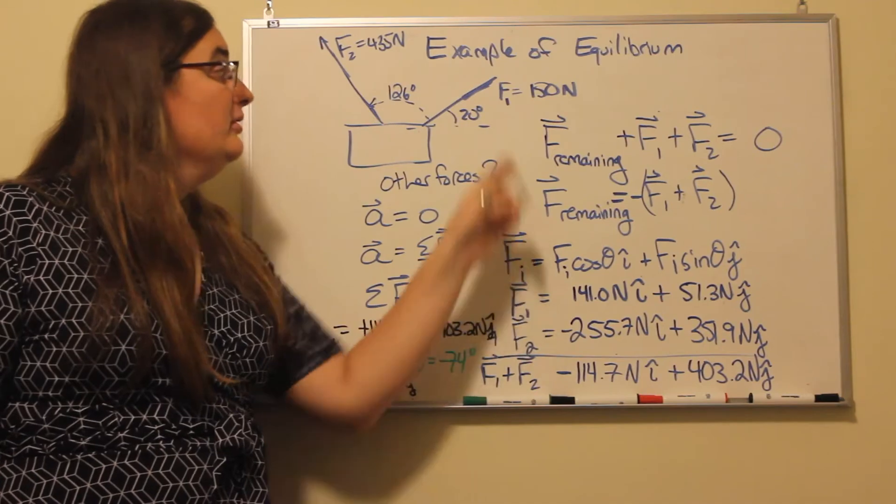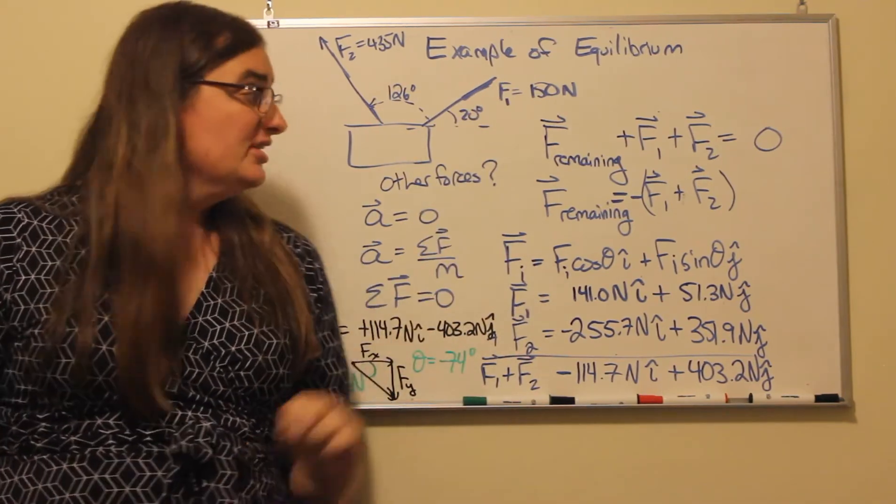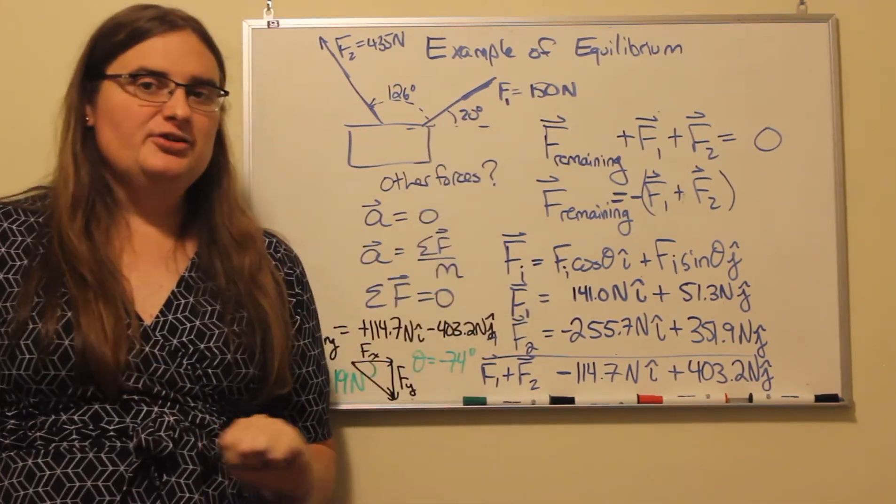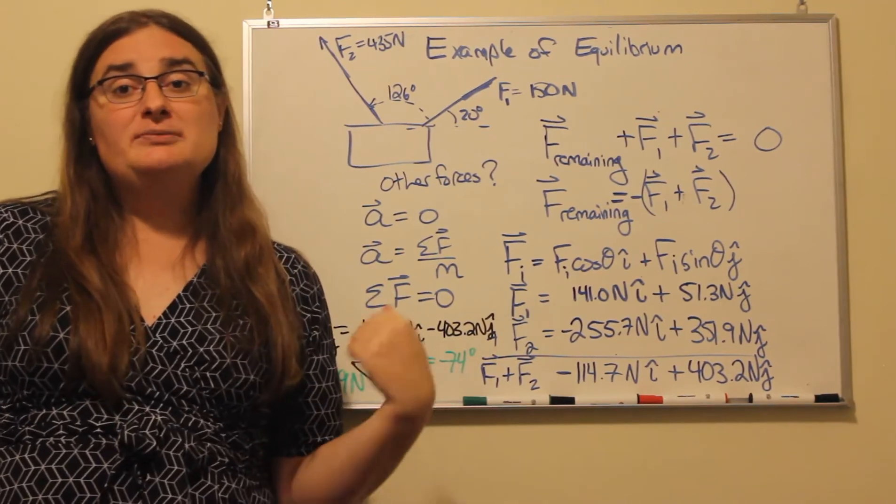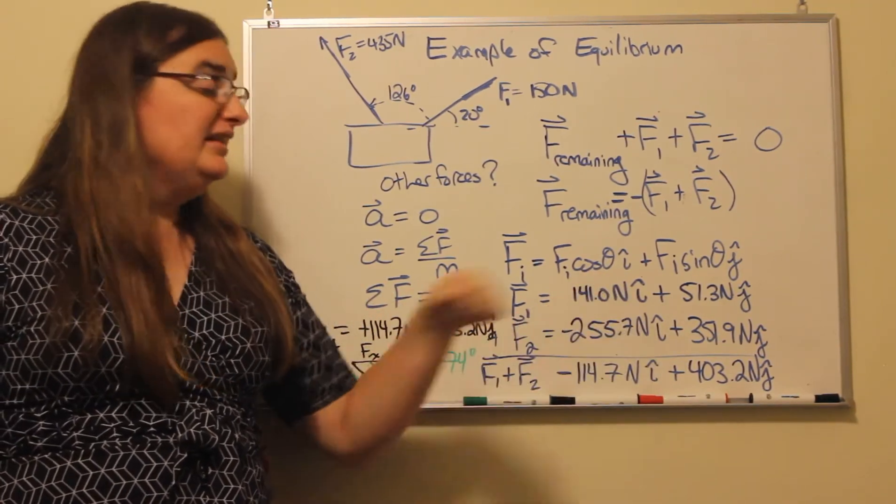So for force one, we take 150 newtons times the cosine of 20 degrees, and that's going to give us 141.0 newtons in the x direction.